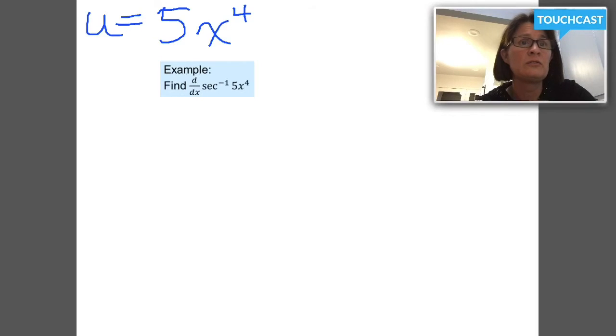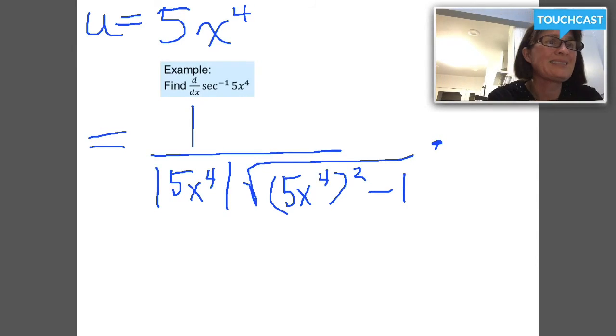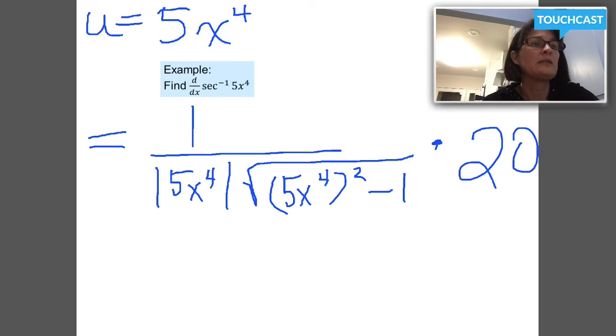My derivative d/dx of inverse secant of 5x to the fourth is going to be... this one's got lots of extra pieces. 1 over the absolute value of u. u in this case is 5x to the fourth. It's the square root of u squared minus 1. Can I urge you, strongly urge you, to put this u inside parentheses before you try to square it? This whole thing is going to get multiplied by du/dx, the derivative of u with respect to x. It's not so bad. Derivative of 5x to the fourth is 4 times 5, 20. That's a times sign. 20x to the third.